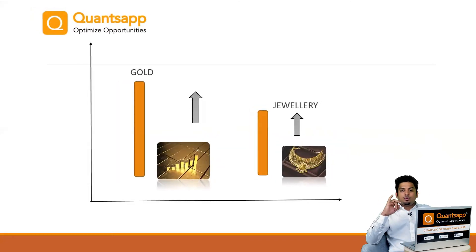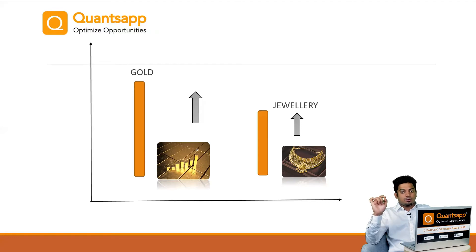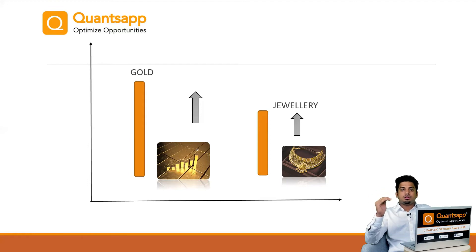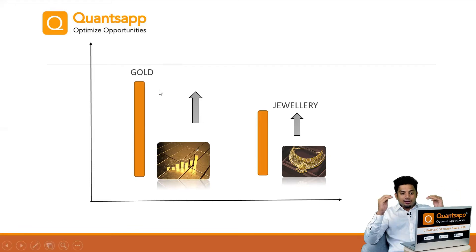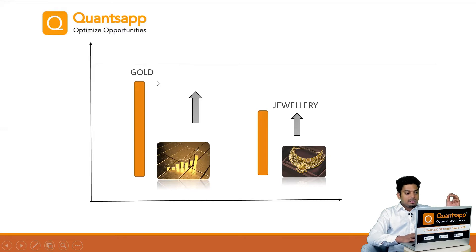Another example: there are two products — the first one is gold, and the other one is jewelry. Assume that the jewelry is purely made of 10 grams of gold. So 10 grams of gold is priced at 50,000 rupees, and similarly the 10-gram gold jewelry would be priced at around 60,000 rupees. Now let's say 10–15 days later, when gold's price goes up from 50,000 to 60,000, jewelry's price will also rise from 60,000 to 70,000. It won't be the case that gold prices go up while jewelry prices go down. So gold is the underlying asset, and jewelry is the derivative product because jewelry derives its value from its underlying — which is gold.